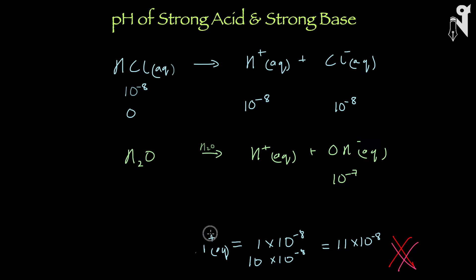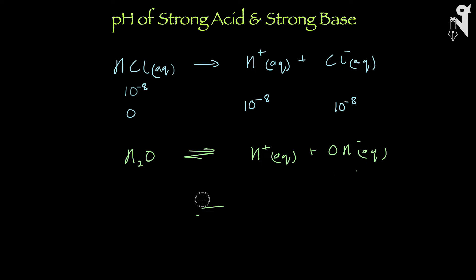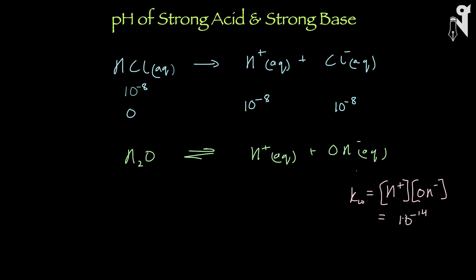The reason is that the water dissociation equation is an equilibrium, not a one-way reaction. The ionic product of H⁺ and OH⁻ is a constant Kw, which remains 10 to the power minus 14 at 25°C. So this equilibrium will not remain at 10⁻⁷ H⁺ and 10⁻⁷ OH⁻, because H⁺ has been provided by another source — HCl.